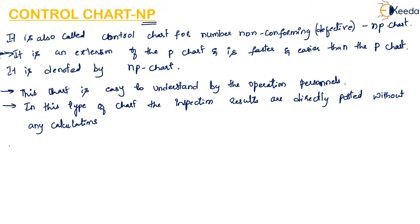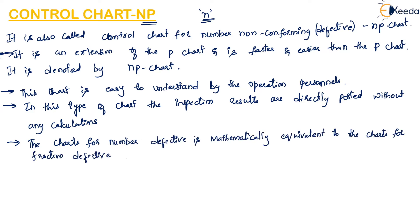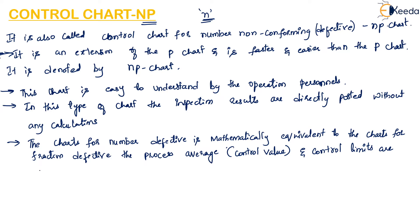The chart for number non-conforming defective is mathematically equivalent to the chart of fraction defective. The process average, the control value, and the control limits change by a factor of n, that is the sample size. So the NP chart and P chart vary only by the sample size n; otherwise, they are mathematically equal.